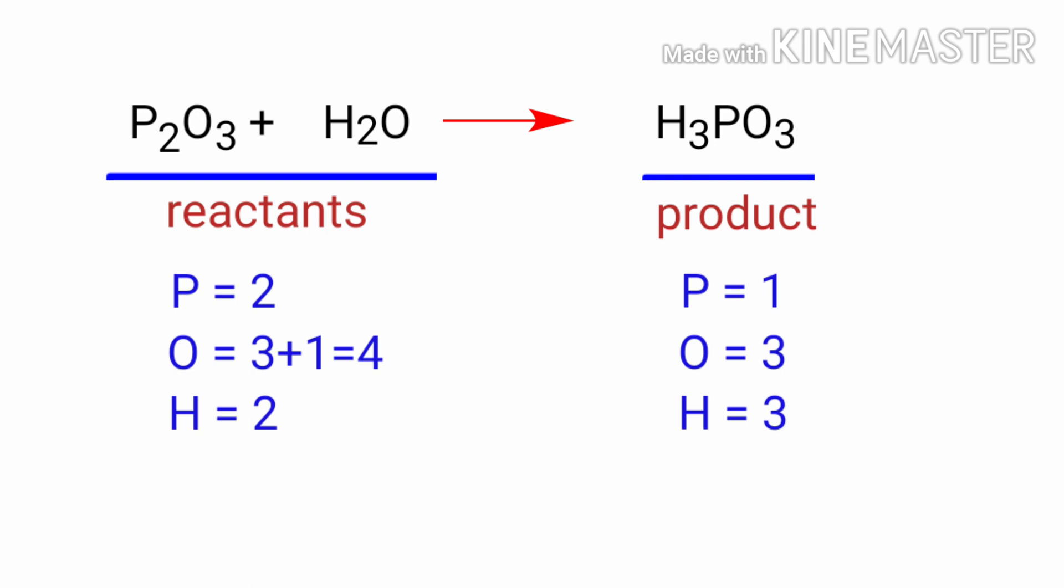In the reactants side there are 2 phosphorus atoms, 4 oxygen atoms, and 2 hydrogen atoms present. On the products side there are 1 phosphorus atom, 3 oxygen atoms, and 3 hydrogen atoms present. The number of atoms are not balanced on both sides.